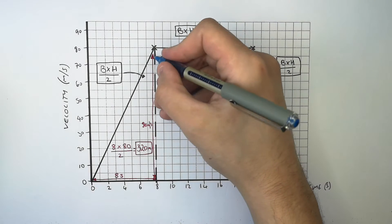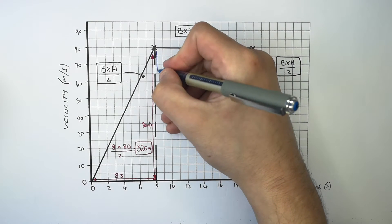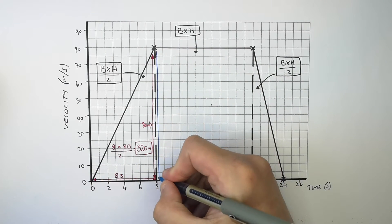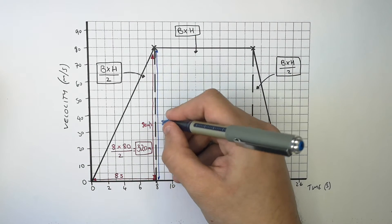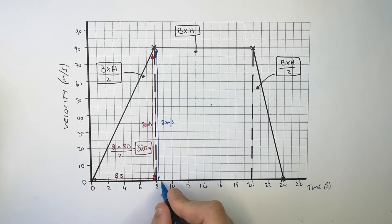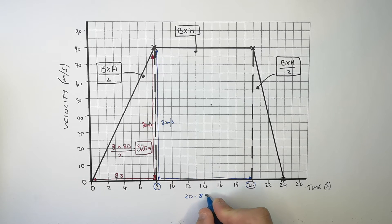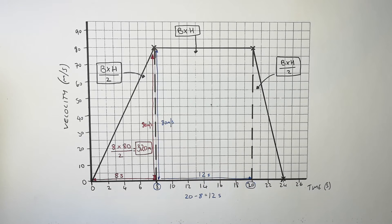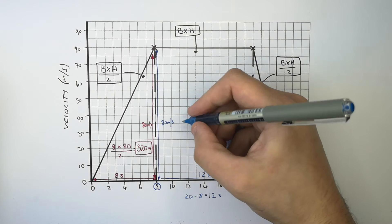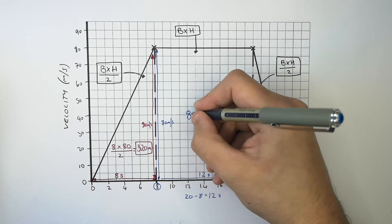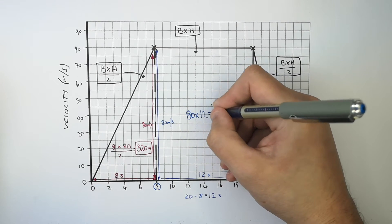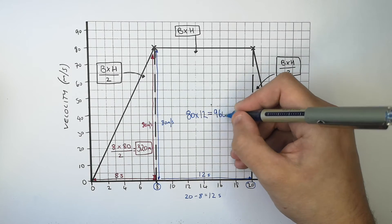To calculate the distance the car travelled while it was travelling at a constant velocity, we only need to use base times height. The height is still 80 metres per second. To work out the base, it's going to be 20 seconds minus 8 seconds, giving a time of 12 seconds. So to work out the distance, you do 80 times 12, which gives you a distance of 960 metres.